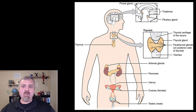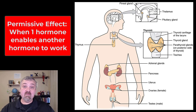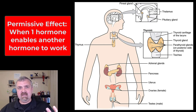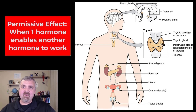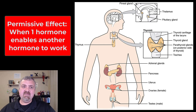Hormones also impact how other hormones work. The first term is permissive effect — there are hormones that actually allow other hormones to do their job. The most important example would be thyroid hormones: a lot of your reproductive hormones actually need the permission of thyroid hormone to work. That makes sense — if you have enough metabolic capacity to reproduce, then you'll get the go-ahead. Insulin would be an example as well. Permissive effect means one hormone enables another hormone to do its job.